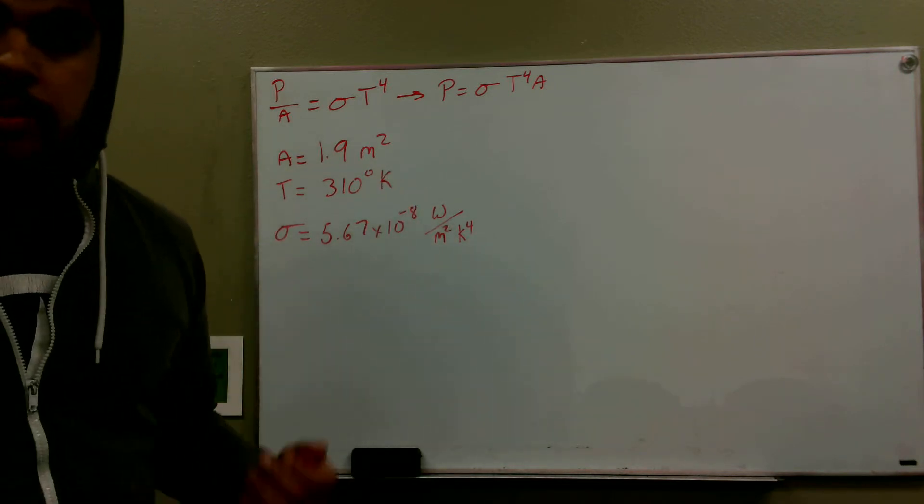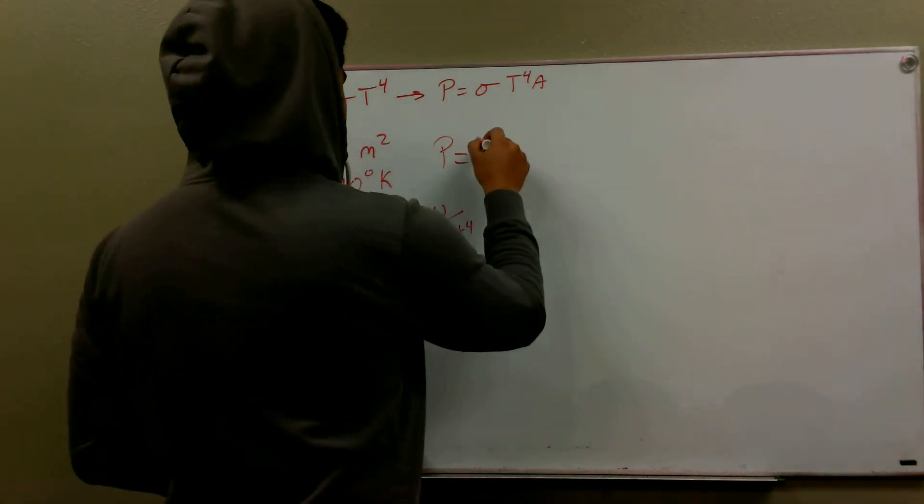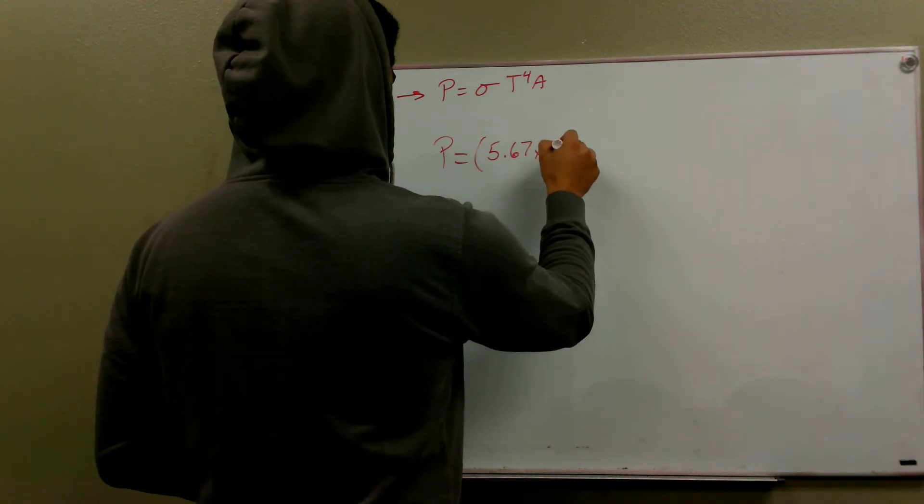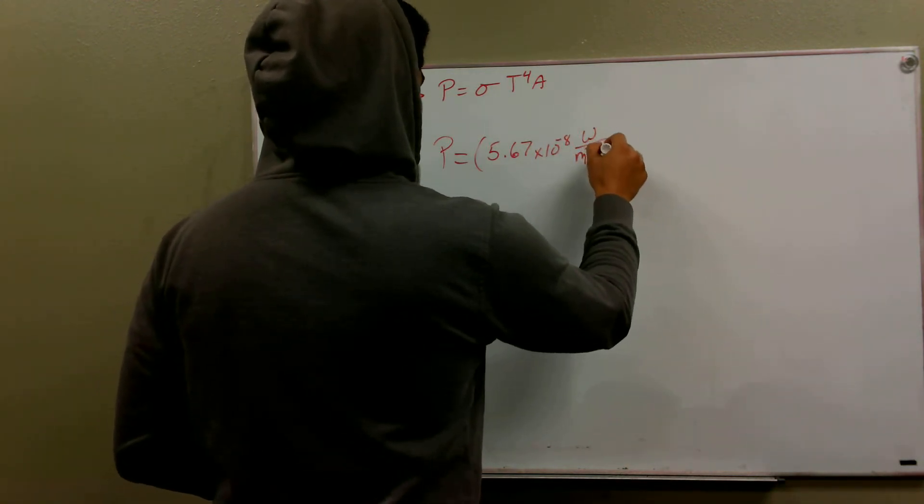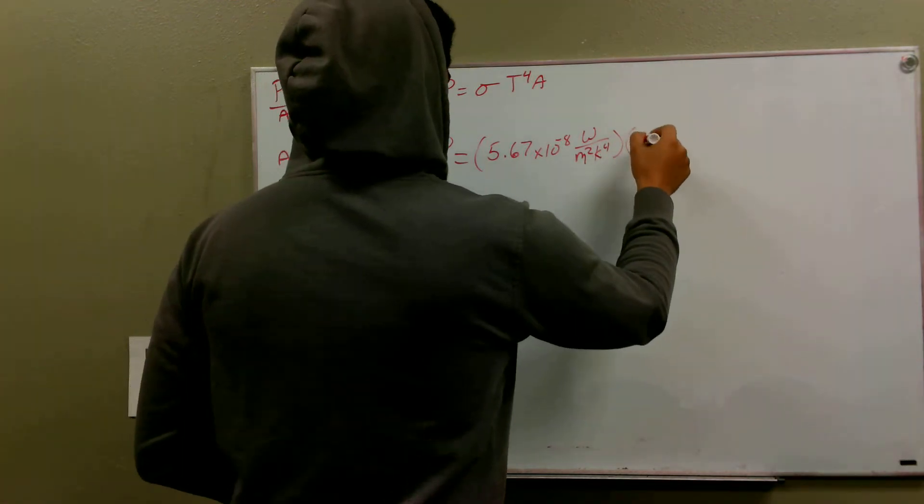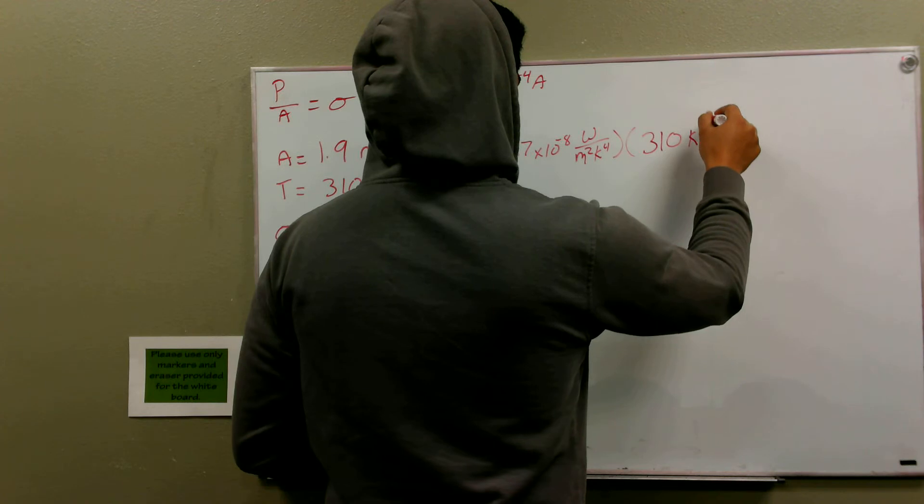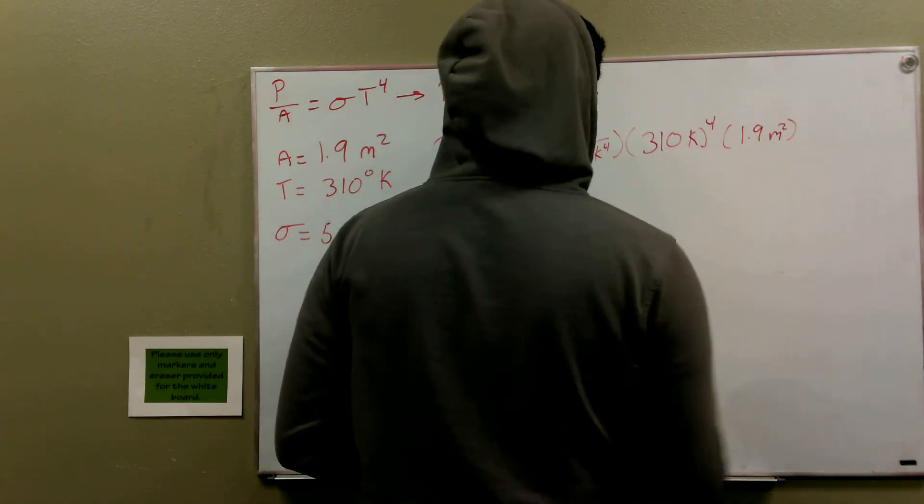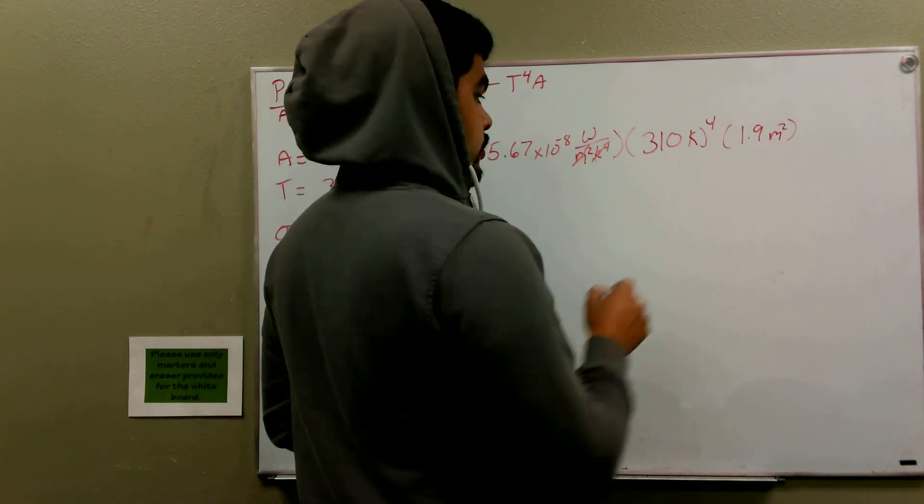Just like before, we know everything. Now, it's just time to plug and chug. We have our power is equal to 5.67 times 10 to the minus 8, and this is watts over meter squared Kelvin to the fourth, multiplied by 310 Kelvin, and this is to the fourth. And that's multiplied by our 1.9 meters squared. Again, meters squared cancels, Kelvin to the fourth cancel.